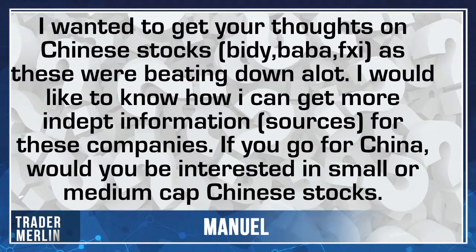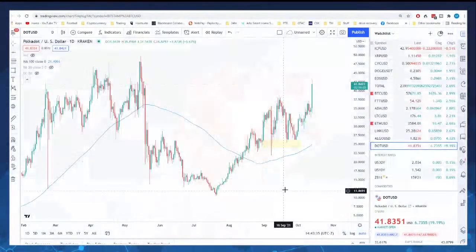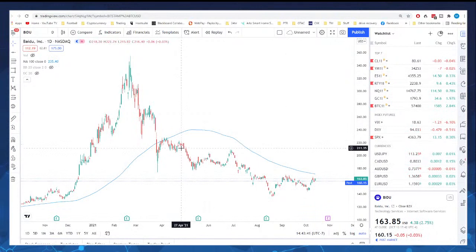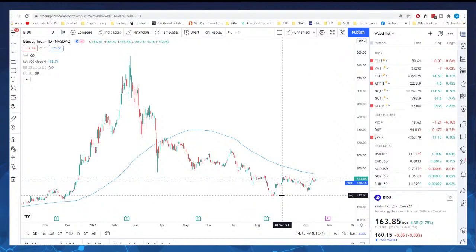Manuel asked about Chinese stocks — Baidu, Alibaba, and FXI, as these were beaten down a lot. How can you get more in-depth information sources for these companies? If you go for China, would you be interested in small or medium caps? I don't really care about cap size — it's about the company themselves. Looking at the charts of Alibaba and Baidu, these guys have really been beaten down. I think Alibaba is a very good potential buy. Here's your Baidu chart — the trend is obviously ugly. The only good thing is the most recent low, which happened October 4th and 5th, is higher than the previous one — so maybe it's stabilized a little bit.